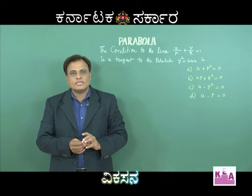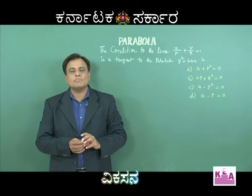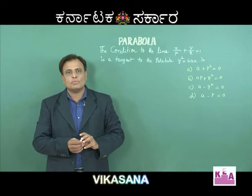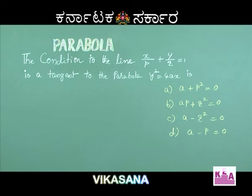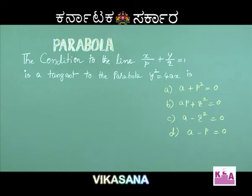Dear students, let us take an example from the topic parabola. Read the question: the condition for the line x/p + y/q = 1 to be a tangent to the parabola y² = 4ax. Options are: (a) a + p² = 0, (b) ap + q² = 0, (c) a - q² = 0, (d) a - p = 0.